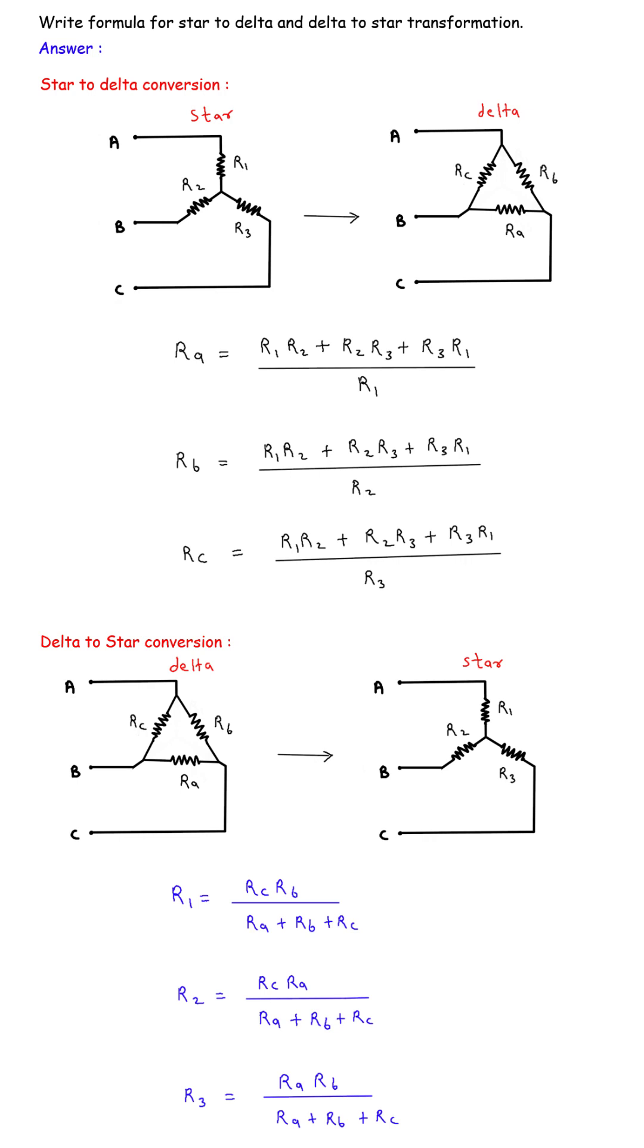In electrical circuits, star and delta are two common ways to connect three resistors. Sometimes we need to convert one form into the other to make analysis easier.